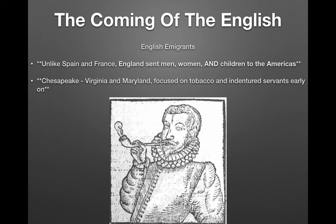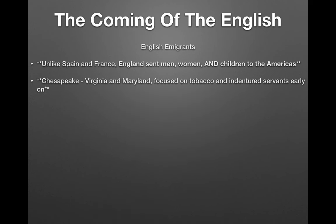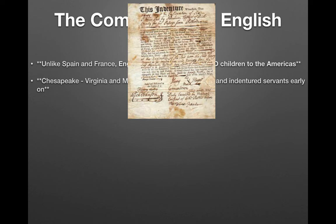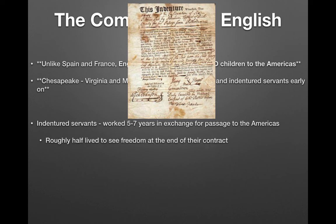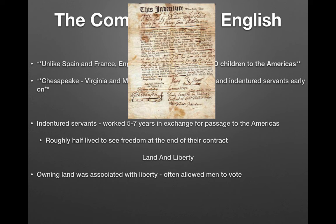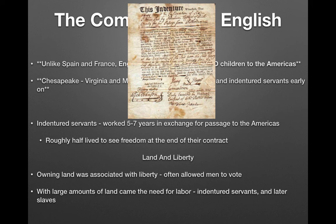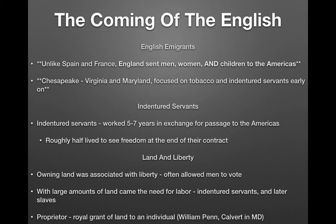The Chesapeake — Virginia and Maryland — focused on tobacco and indentured servants early on. An indentured servant was someone who came to the Americas in exchange for working five to seven years. Roughly half of them lived to see freedom at the end of their contracts. Owning land was associated with liberty in England, allowing men to vote. Large amounts of land created a need for labor, initially filled by indentured servants before the shift to African slavery.